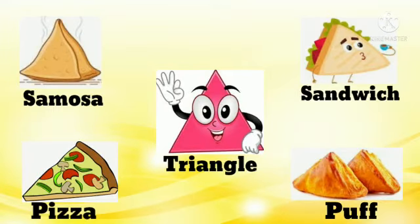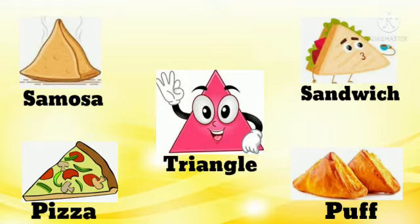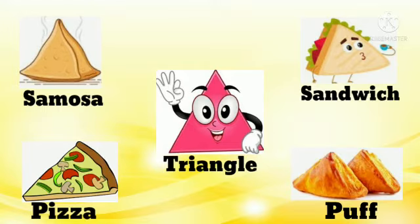Now, children, let's see what objects come in triangle shape. Your samosa, your sandwich, pizza, and puff — all these objects are triangle in shape. We see them every day. These objects are of triangle shape.